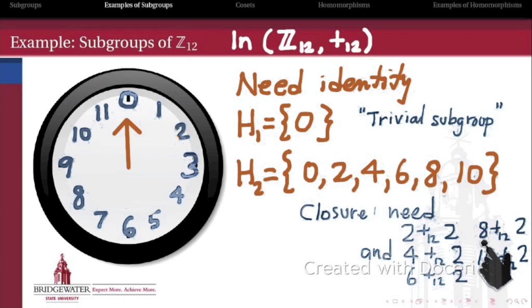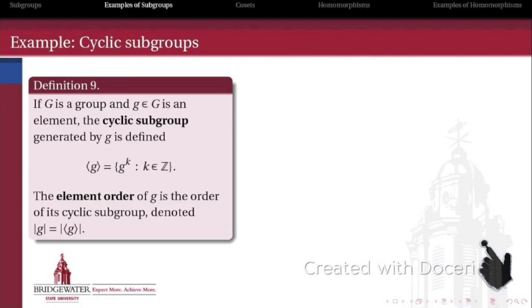We can also verify that this set satisfies the inverse property — every element 0, 2, 4, 6, 8, 10 has its additive inverse also belonging to this subset. For instance, the additive inverse of 4 is 8, and both belong to this subset. So this collection does in fact form a subgroup.